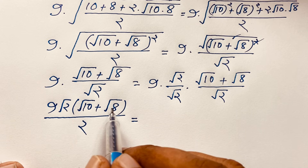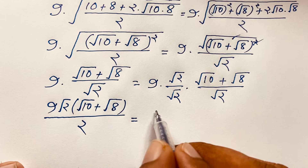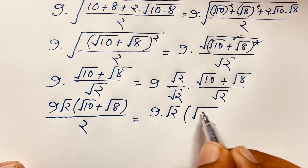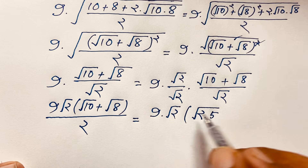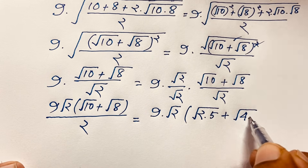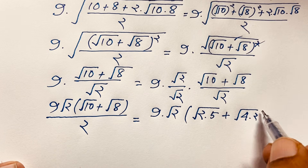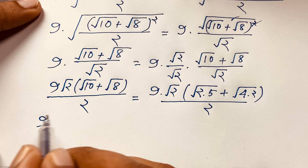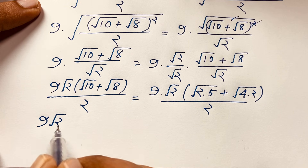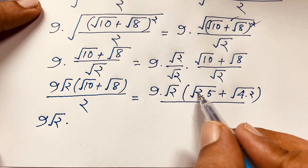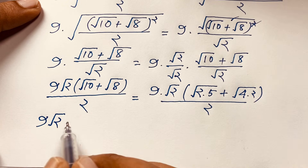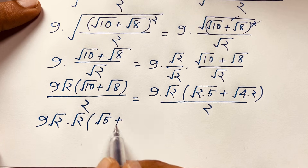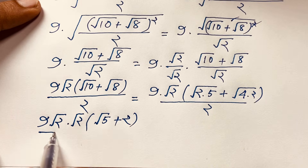So we have 9 times square root of 2 times (square root of 2 times 5 plus square root of 4 times 2). Square root 2 is a common factor, so factoring it out gives square root 2 times (square root 5 plus square root 4), which is square root 2 times (square root 5 plus 2), all over 2.